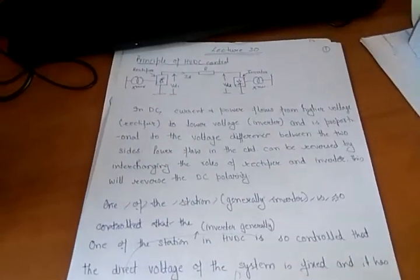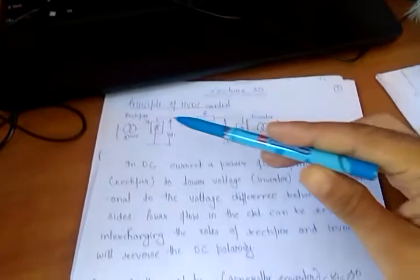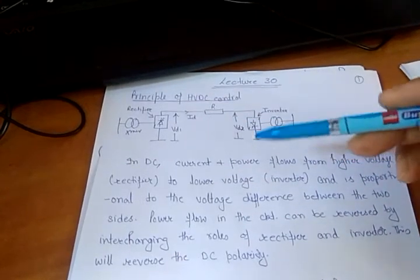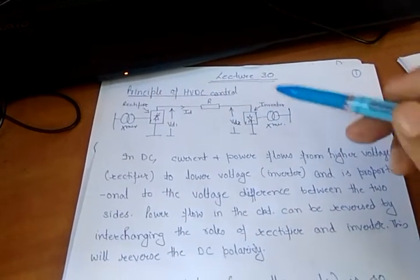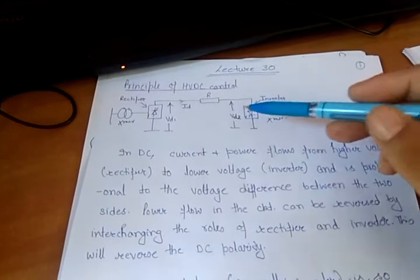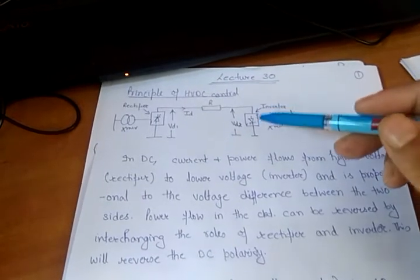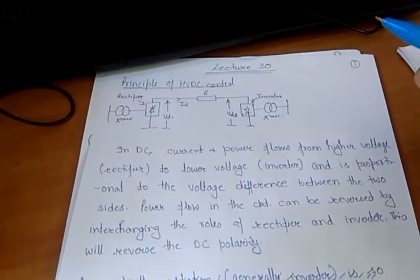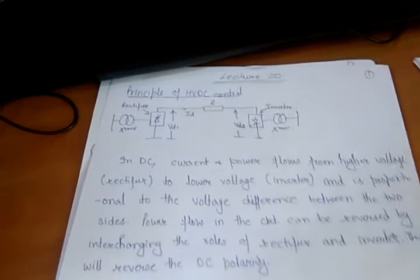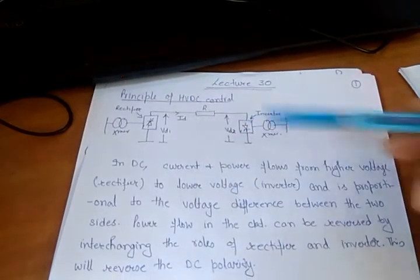Continuing lecture number 30 - we have two stations: one acts as inverter, the other acts as rectifier, and power flows from rectifier to inverter. If you want the power flow to reverse, you interchange the roles of the inverter and the rectifier. The rectifier will act like an inverter and the inverter will act like the rectifier, and only in that case the direction of power flow will reverse.